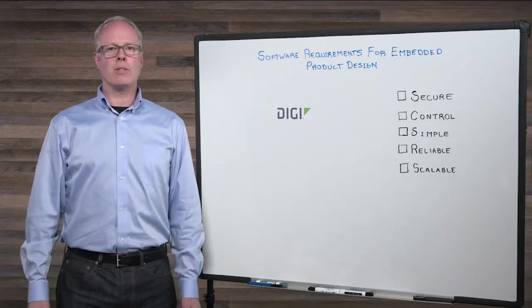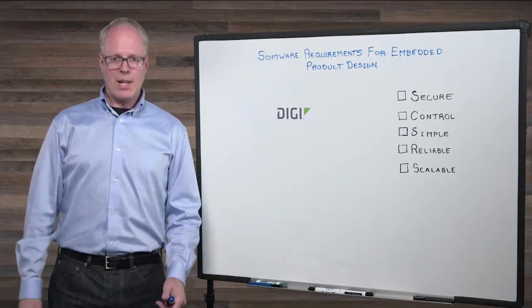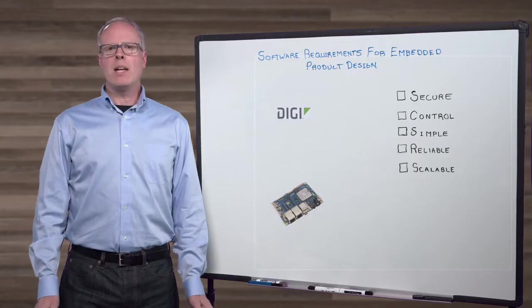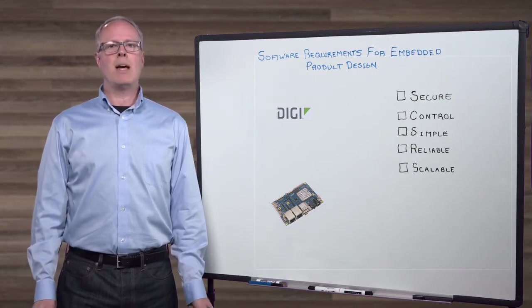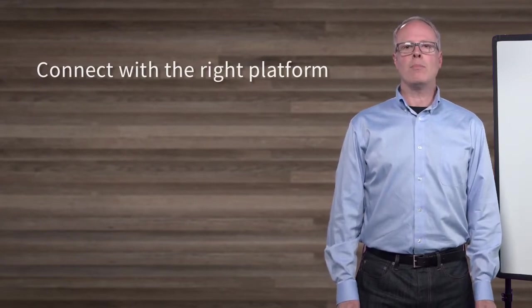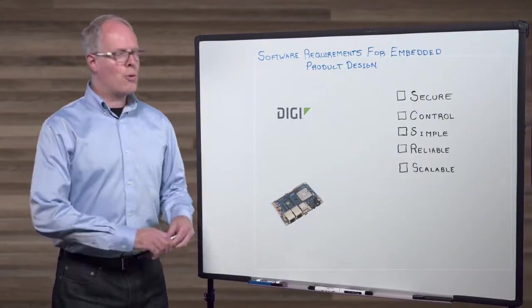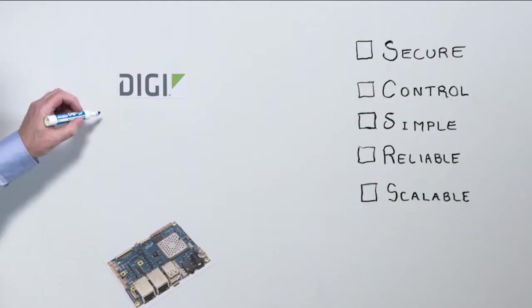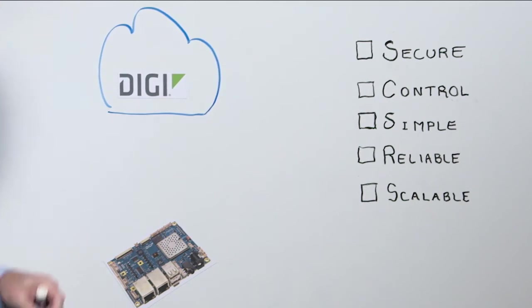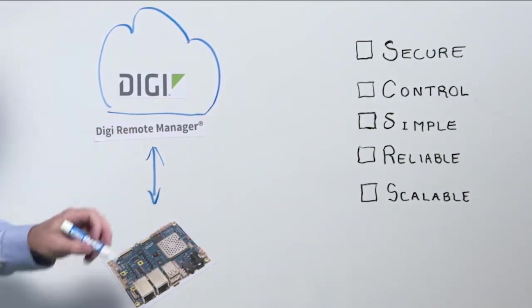What should you look for? Let's take a look at the top five software requirements for embedded product design. In the middle of everything is an embedded module with a software development kit. If you're going to be keeping track of many of these modules, collecting data, and managing your things, you'll want to make sure that you can connect easily to the right software platform so you can manage, monitor, and configure a large number of devices efficiently. Look for a ready-to-use cloud platform for connecting your sensors and devices to remote end-user applications. This allows you to focus on your embedded design rather than how you're going to manage those devices once they're deployed.